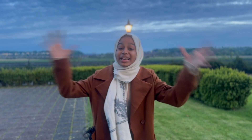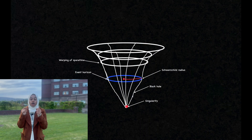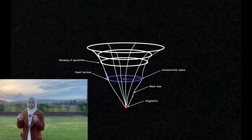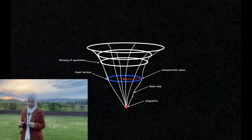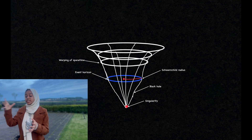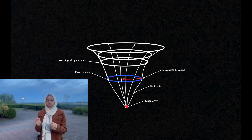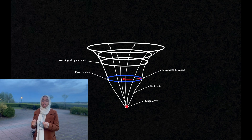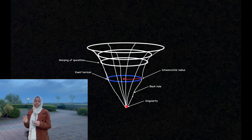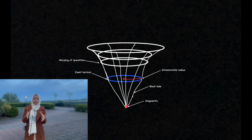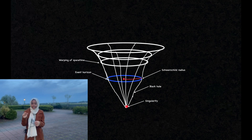Black holes form when massive stars die. They have concentrated mass at a point of infinite density called the singularity. At a distance from this, known as the Schwarzschild radius, is an imaginary spherical surface called the event horizon. The gravity of this surface is so great that nothing, not even light, can escape.